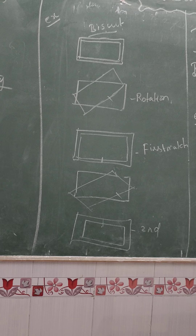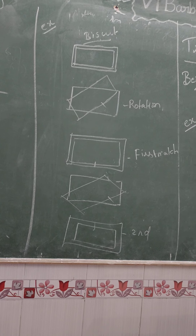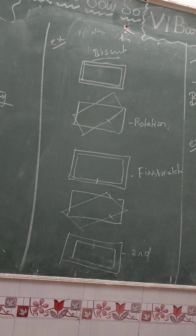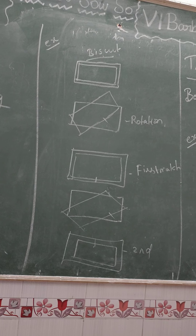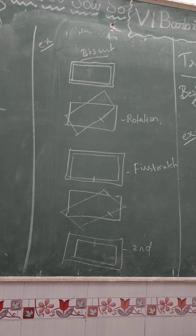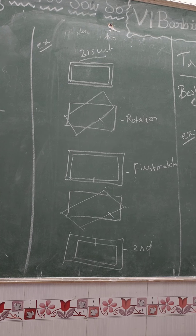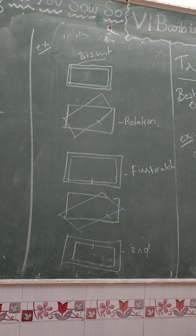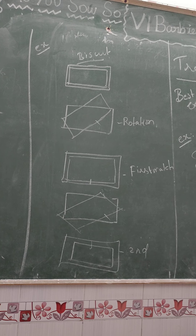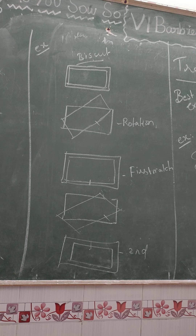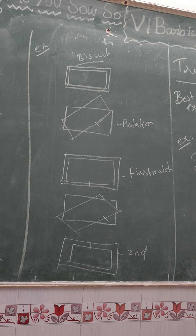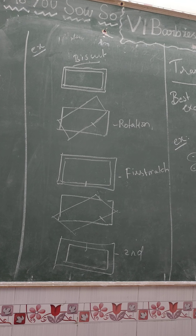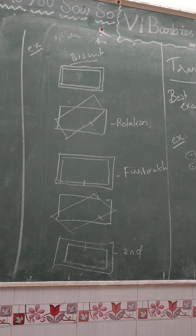If you take the biscuit, two times it will match. So how many times it will match — we will match the rotational symmetry. So we will look at four symmetry types. First, we will see the line symmetry. Next, we will see the reflection symmetry. Then we will see the rotational symmetry.